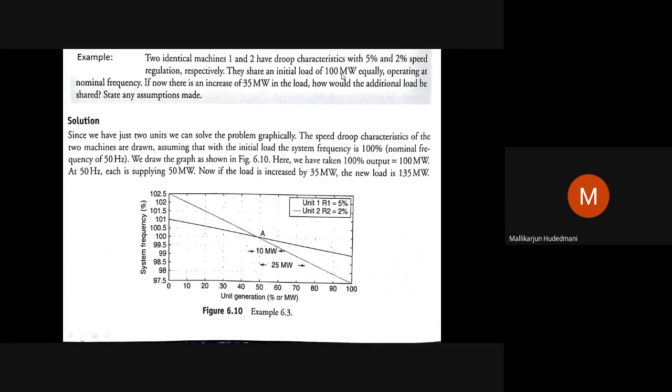The capacity of machine 1 and machine 2 is not given — this is just a conceptual exploration. The droop of machine 1 is 5% and machine 2 is 2%, but their capacities are not mentioned. What is mentioned: they were sharing 100 MW equally — 50 MW each — and operating at nominal frequency. I assume nominal frequency as 50 Hz. In an exam, such data must be provided.